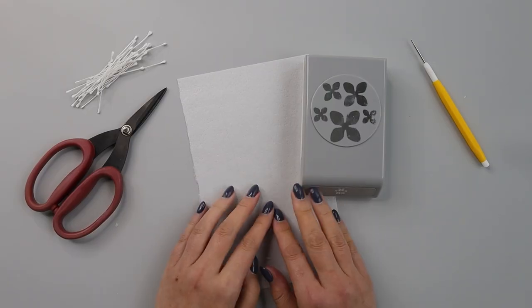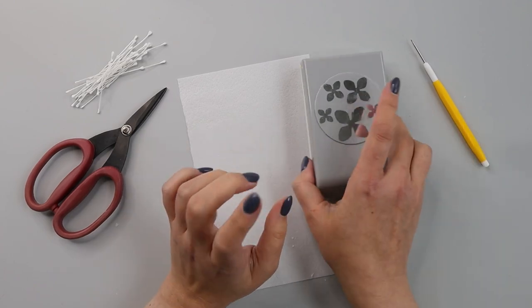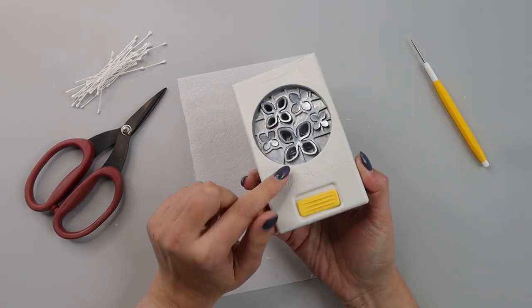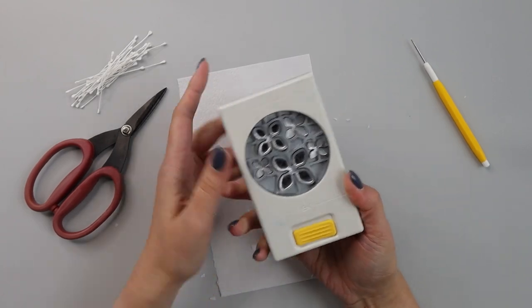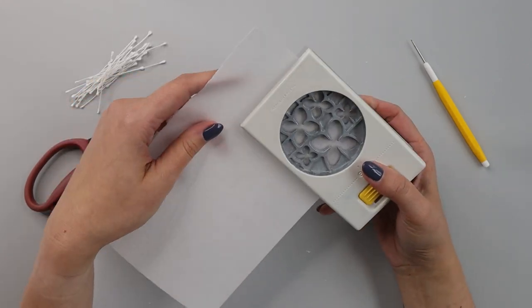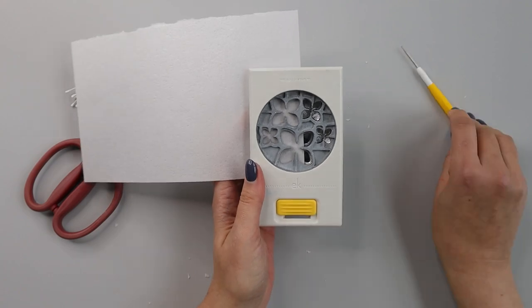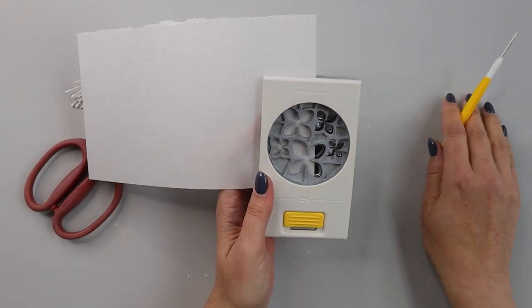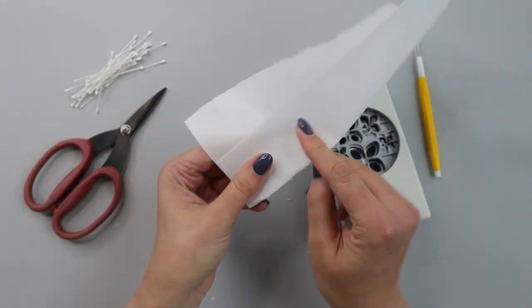To start with making my hydrangeas, to speed up the process, I'm going to use this craft punch. You can see it has different sizes of hydrangeas, but I want to use the largest one. I know I can cut through about two layers at the same time, so I'm going to measure how much wafer paper I need and fold my wafer paper in half.